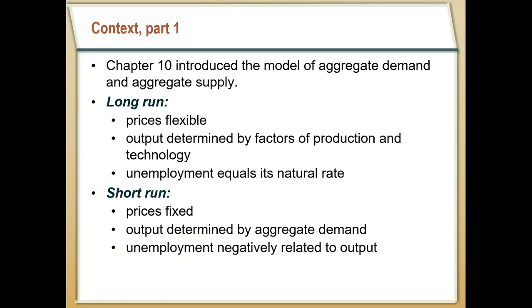For Chapters 3 through 7 we primarily focused on the long run where prices were perfectly flexible, and because of that output was really only determined by the supply side. It was really only determined by those factors of production, capital and labor, and technology. That's why we had that vertical long-run aggregate supply curve. This assumed that unemployment was always going to be at its natural rate.